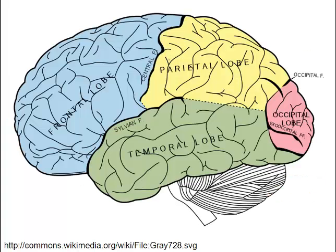The cerebral cortex is the outer layer of the cerebrum. It's composed of grey matter, and it's not much thicker than the thickness of a hair. The convolutions increase the surface area of the cerebral cortex, meaning that more cerebral cortex can be fit into the limited size of our skull.